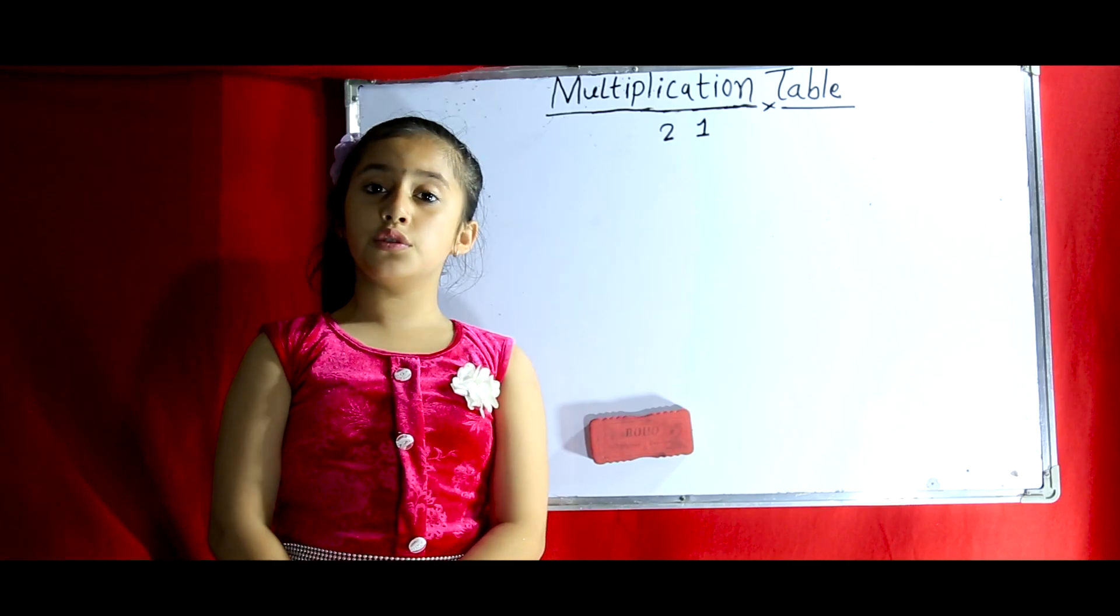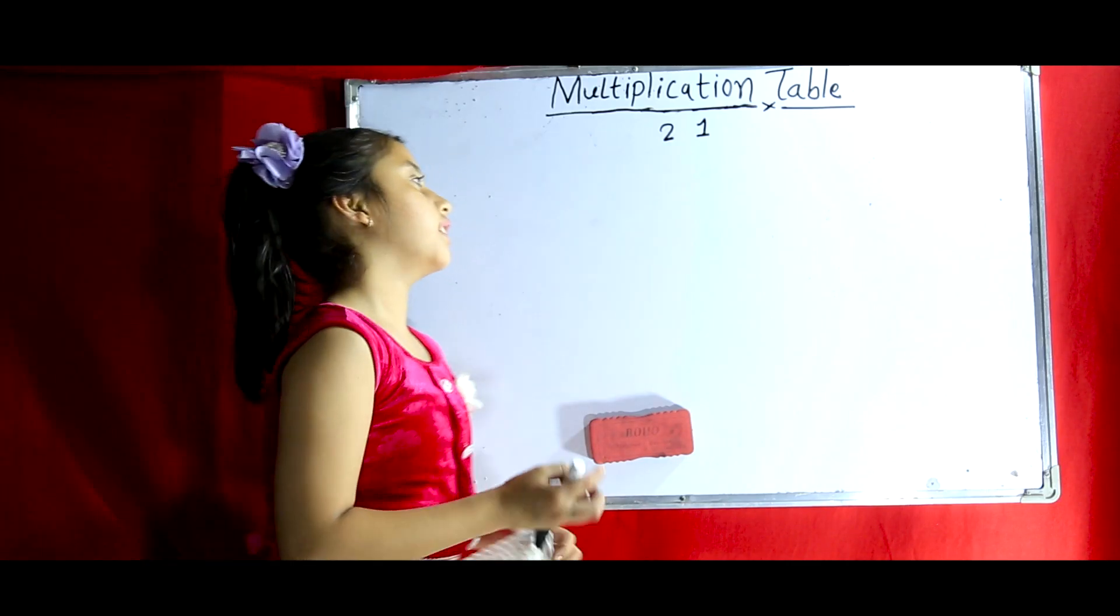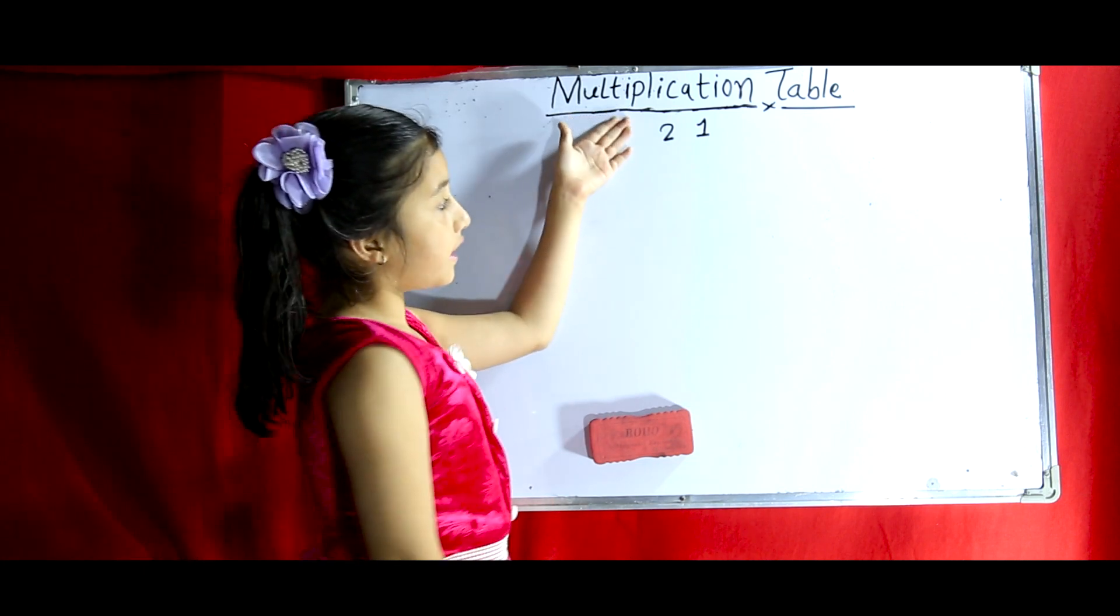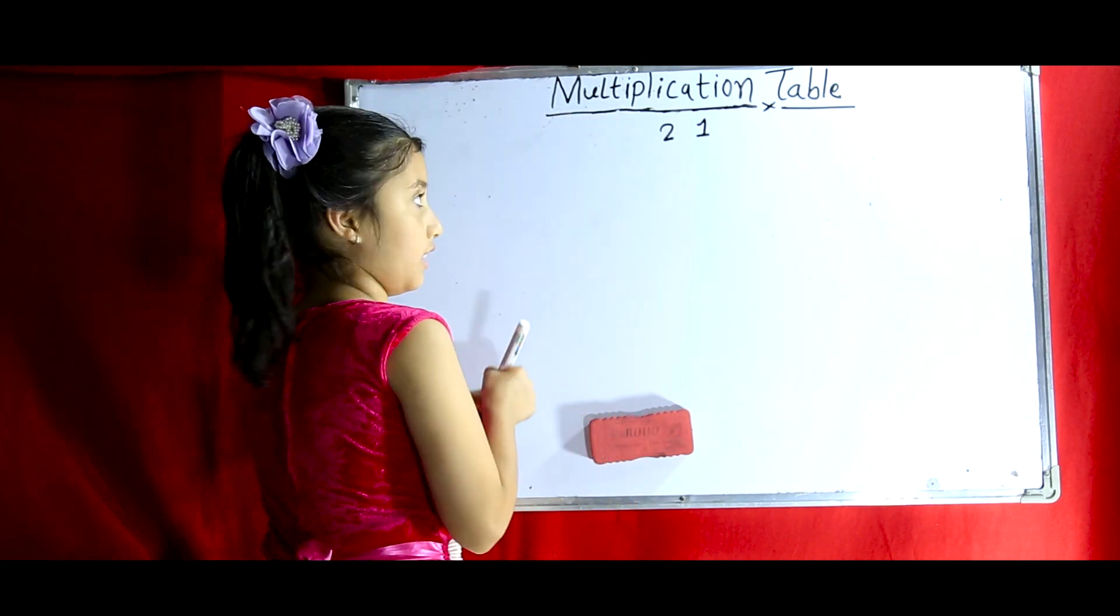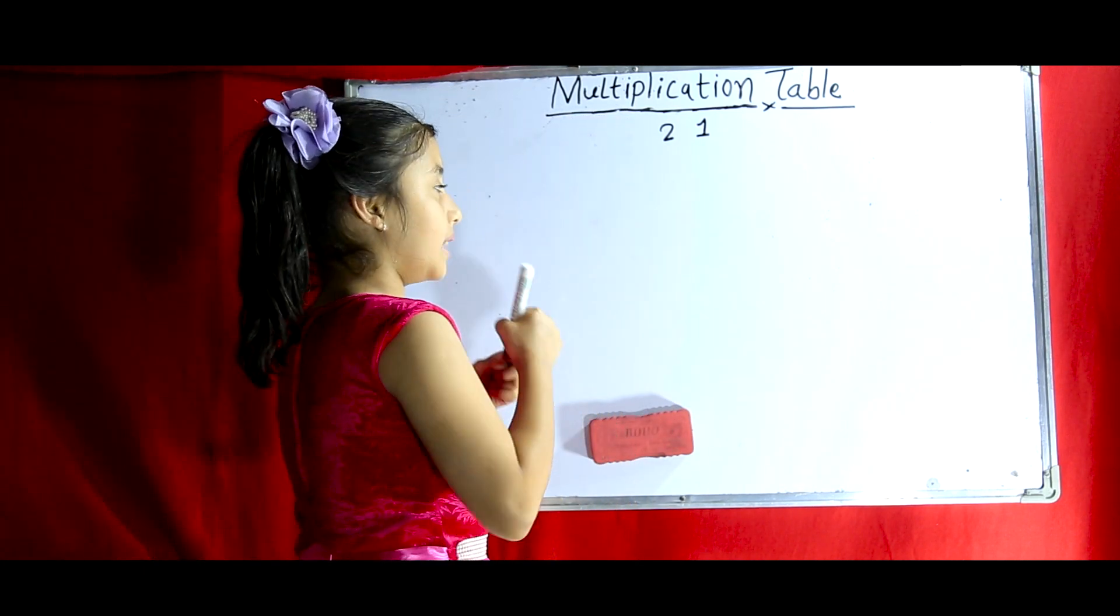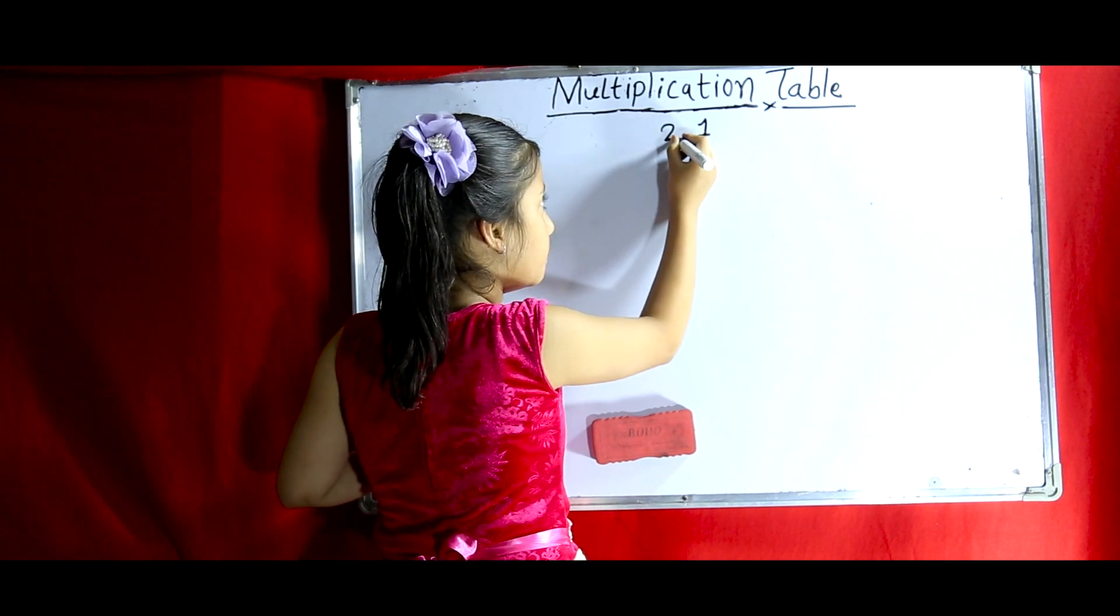Now I'm going to show you the technique of 21. In the left side, write the table of 2 and on the right side, write the table of 1 and copy it back.